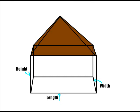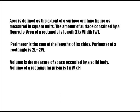The second thing they asked me was to find the area, volume, and perimeter of my house. Area is defined as the extent of a surface or plane figure as measured in square units, the amount of surface contained by a figure. For example, the area of a rectangle is length, L, times width, W.